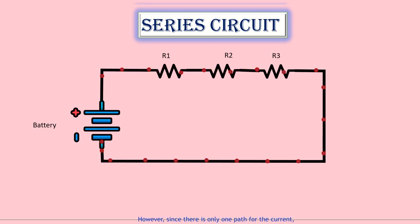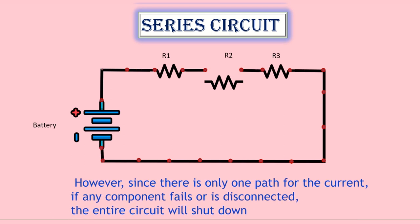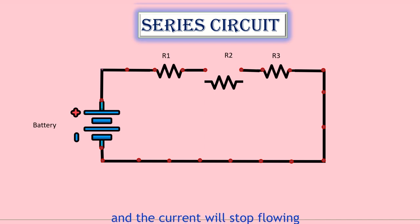However, since there is only one path for the current, if any component fails or is disconnected, the entire circuit will shut down and the current will stop flowing.